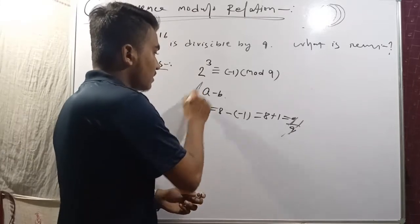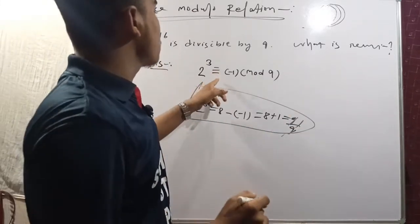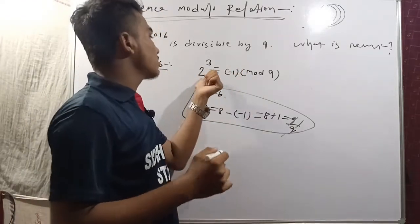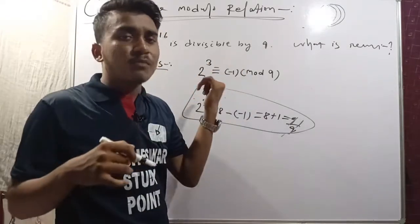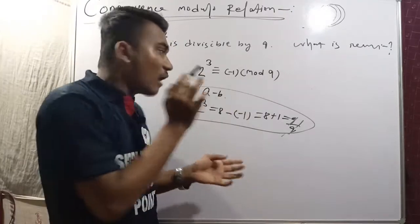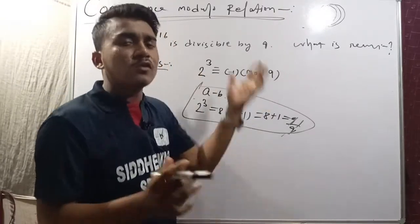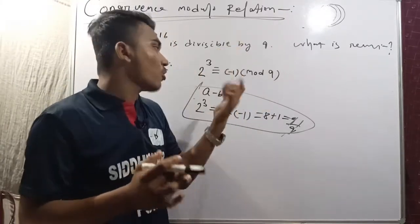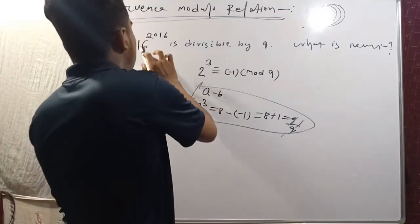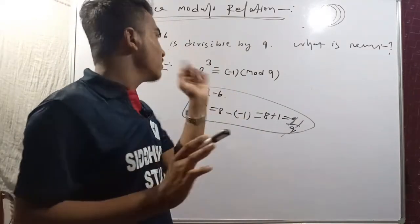Two to the power q is congruent to minus 1, mod 9. Two to the power q — all that satisfies — will be a neighbor. Now, 16 to the power 2016 — let's work on this.